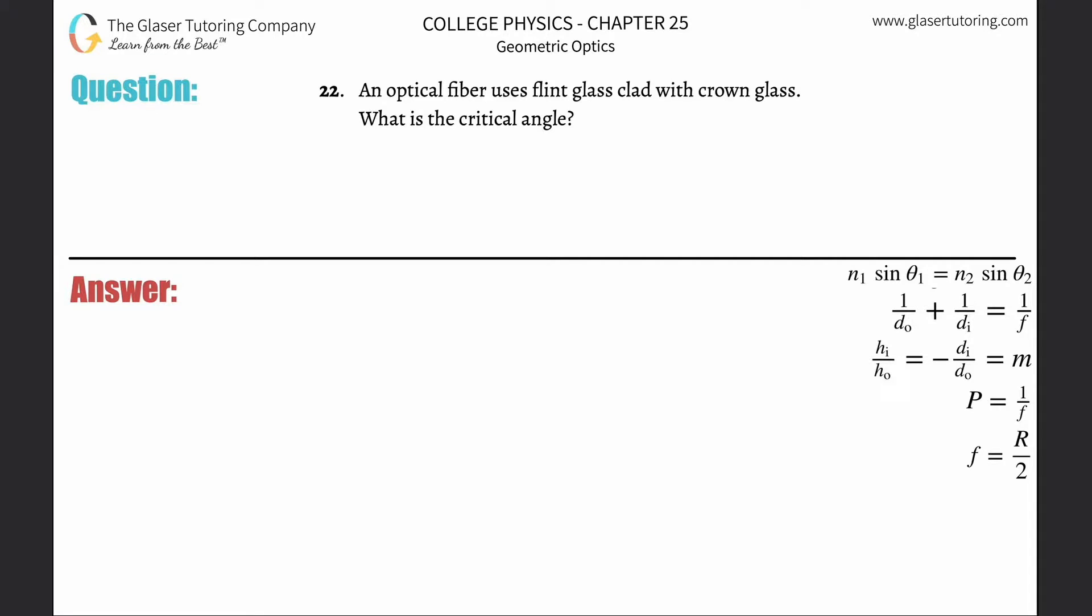Number 22: An optical fiber uses flint glass clad with crown glass. What is the critical angle? For a review of what critical angle is and the formula I'm going to use here, please check out number 20. We have the critical angle here going to be equal to the inverse sine of n2 over n1.